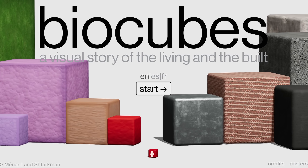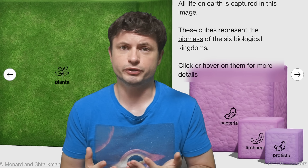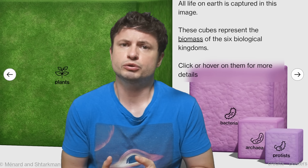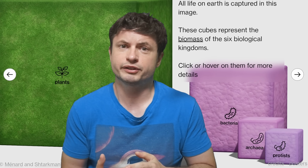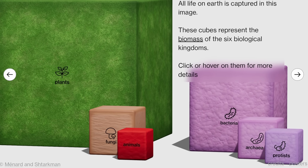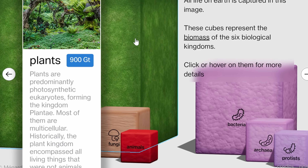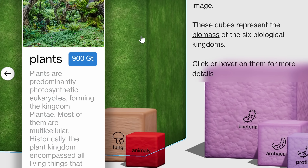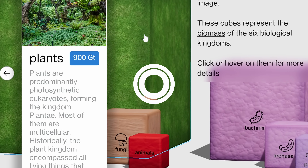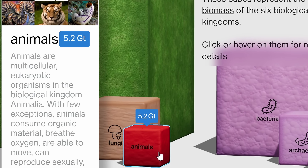We start with 6 different cubes. Each cube is a visual representation of the total mass for a specific type of life. As you can see, plants really dominate — 900 gigatons of everything on the planet is in the form of plants, and a mere 5.2 gigatons are animals. But obviously if it wasn't for plants, none of these animals would be able to survive, because plants provide food and a lot of other resources, including oxygen.